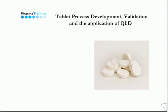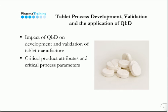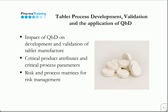Tablet Process Development is an interactive two-day workshop providing up-to-date, relevant and detailed information on the impact of quality by design on the development and validation of tablet manufacturing processes. We will show you how to identify and evaluate critical product attributes and critical process parameters for tablets and their implications for process control. The course introduces new concepts including the use of risk and process matrices for risk management, and includes a comprehensive review of the latest ICH and FDA guidance on quality by design and process development.